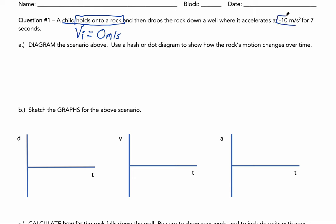We don't need to be told the specific acceleration rate because we already know it. Even if they didn't tell us it was negative 10 meters per second squared, we could assume it because we're on planet Earth and the acceleration due to gravity is negative 10 m/s², rounded from negative 9.8 m/s². The rock falls for seven seconds, so our time is seven seconds and our acceleration is negative 10 m/s².